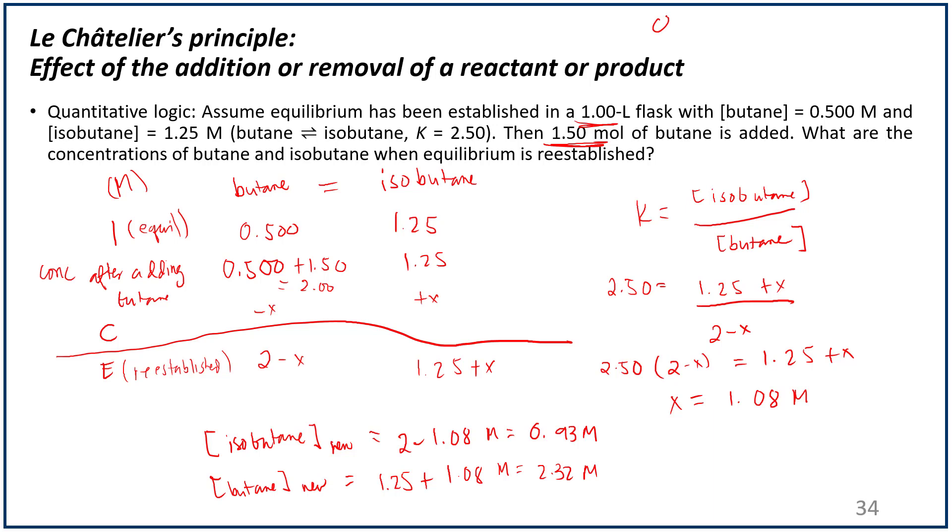After that, one thing that you can do is to check if the ratio is still 2.5. So what you do is, using this K expression, is 2.5 equal to 2.32 molar divided by 0.93, and it turns out that these two are actually equal to each other. So that means that equilibrium indeed has been reestablished.